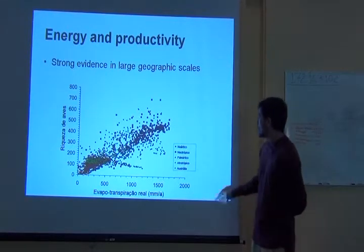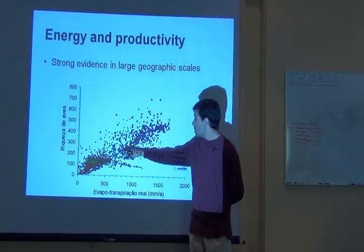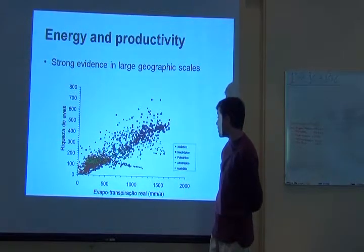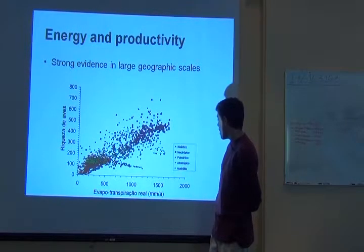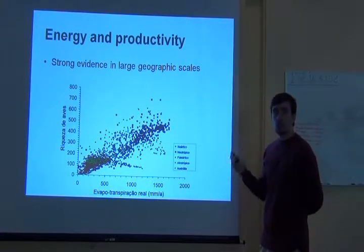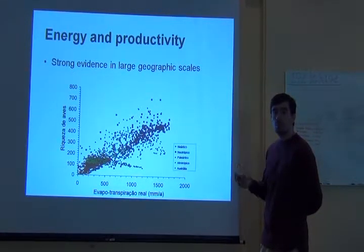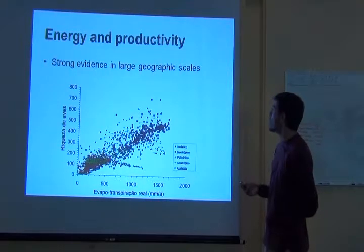The colors of the dots represent different regions of the planet: Nearctic, Neotropic, Palearctic, Afrotropic, and Australia. So there is a general trend across the planet that when you increase primary productivity, you increase species richness — at least for birds.